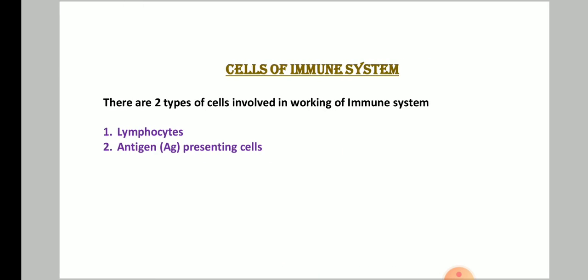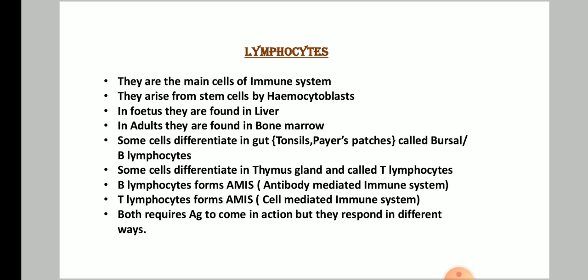The next part is the cells of the immune system. There are two types of cells involved: lymphocytes and antigen-presenting cells. Lymphocytes are the main cells of the immune system. They arise by the process involving hemocytoblasts — stem cells — where they develop from. In fetuses, lymphocytes are found in the liver, whereas in adults they are found in bone marrow.